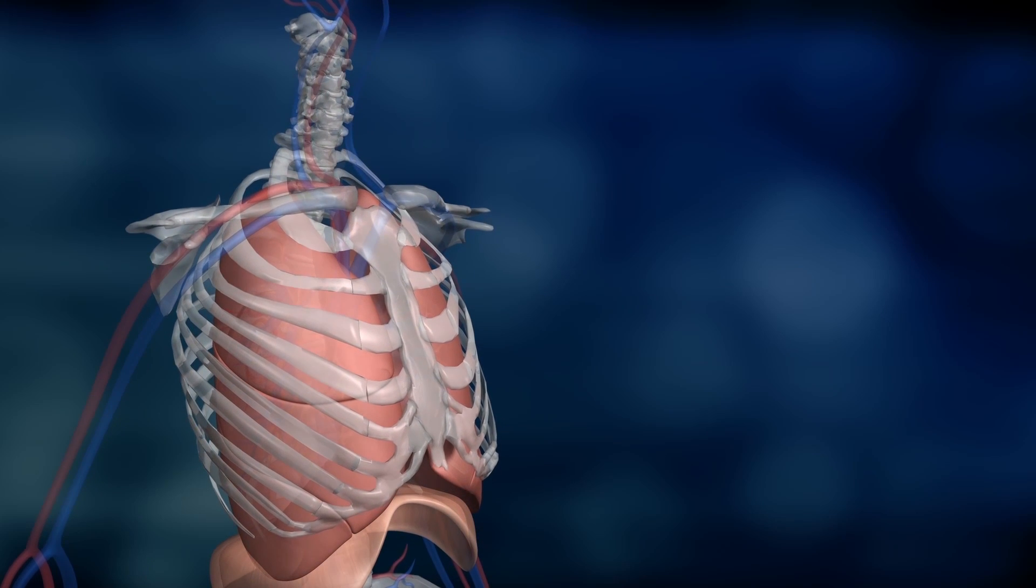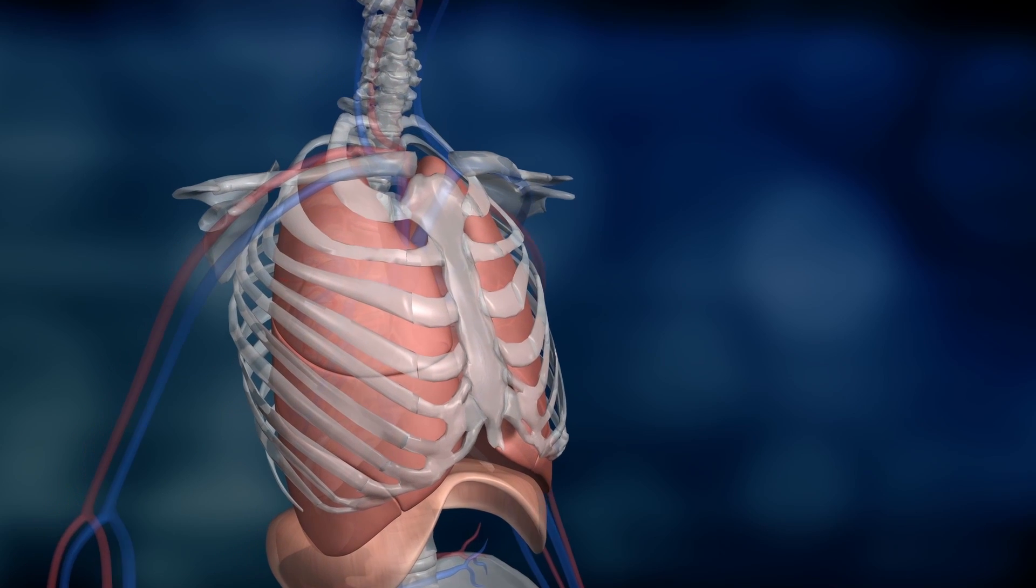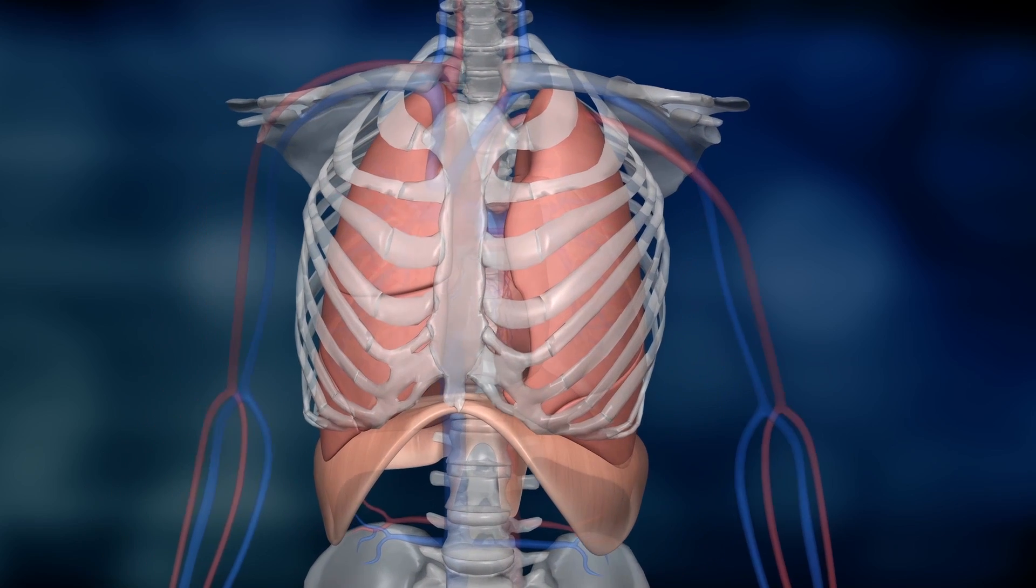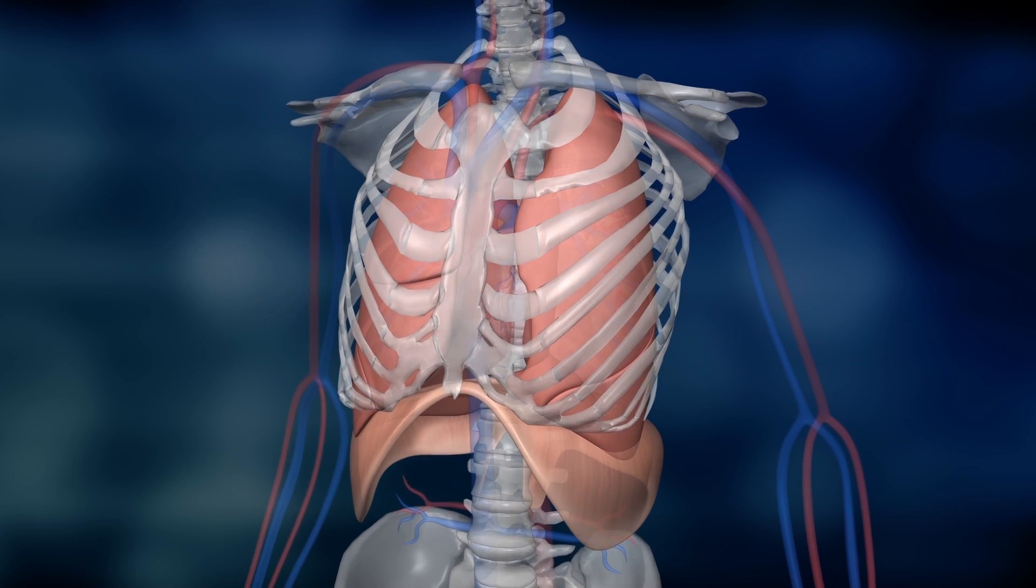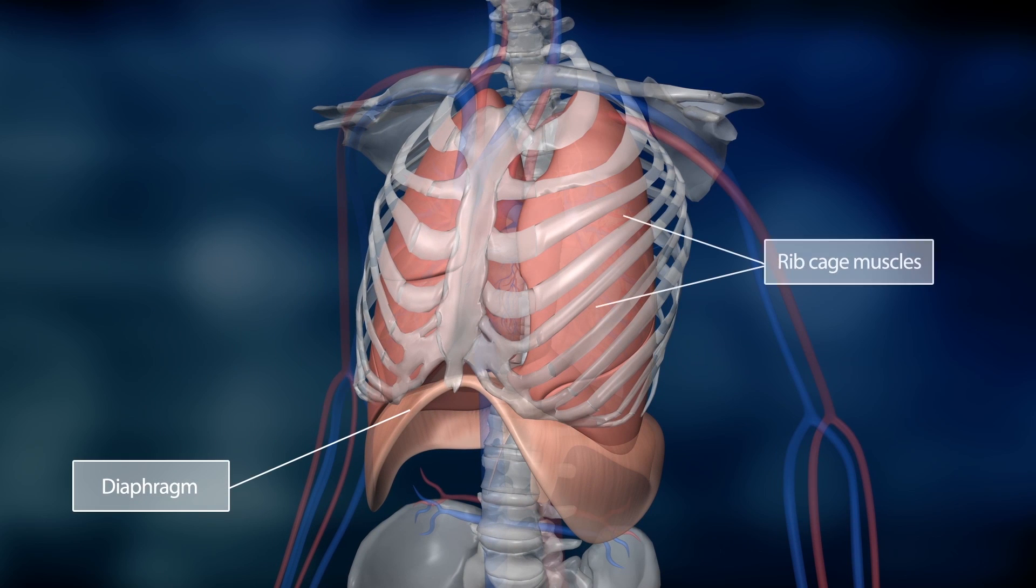When we inhale, the lungs expand and air flows in. They are expanded by nearby contracting muscles that widen the chest cavity. The most relevant muscle groups for this include the diaphragm and the muscles of the ribcage.